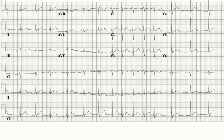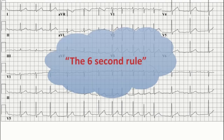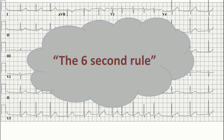So to solve this problem, in such cases we can use the 6-second rule, which is a very simple and convenient method to calculate heart rate. One thing to remember is that this method is not highly accurate because the heart rate will always be a multiple of 10. But on the other hand, it can be used in both regular as well as irregular rhythms.